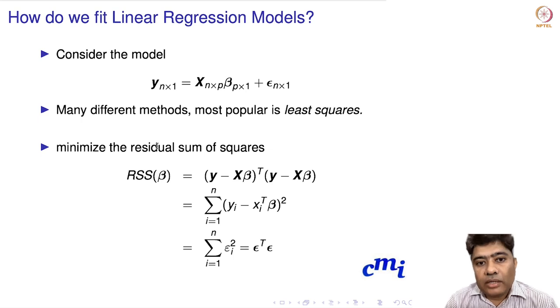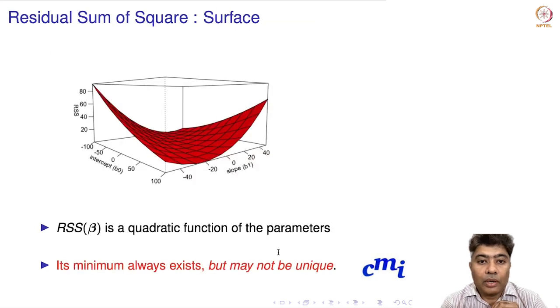We're going to understand the residual sum of squares of error: Y minus X beta. We can take X beta to the left side, giving Y minus X beta, which is epsilon. Effectively transpose: (Y minus X beta) transpose (Y minus X beta). This is effectively (Y minus X)^T beta squared, summed. This is epsilon_i squared or epsilon transpose epsilon. This is called residual sum of squares of error.